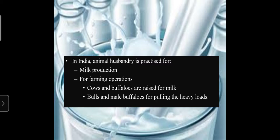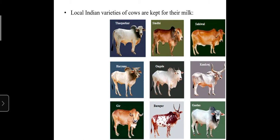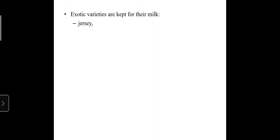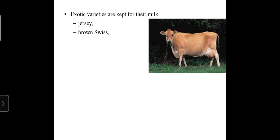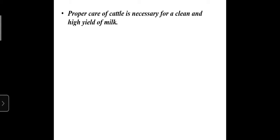Local Indian varieties of cows kept for their milk include Saival, Sindhi, Gir, Lalkandari, Devni, Killari, and Dangi. The exotic varieties kept for their milk are Jersey, Brown Swiss, and Holstein. Proper care of cattle is necessary for clean and high yield of milk.